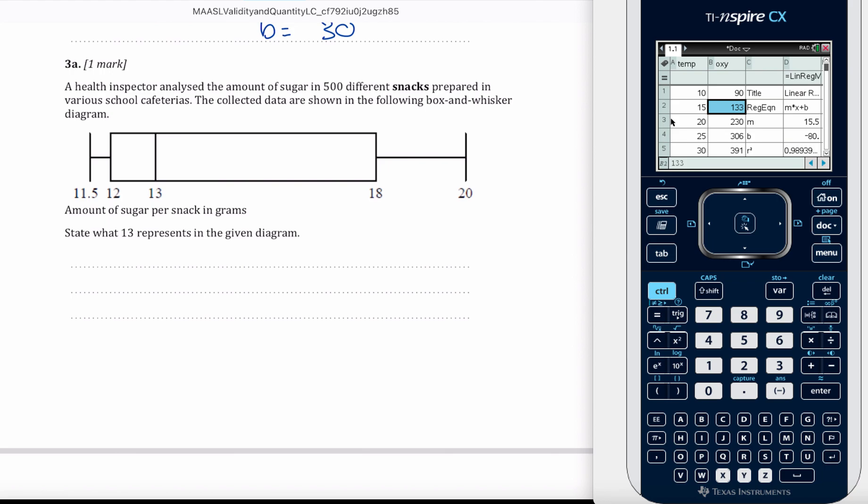So the lowest value is 11.5, upper state with a value at 13. 13 represents, let's do it in red, 13 represents the median.